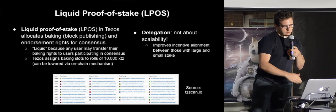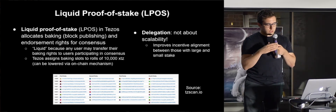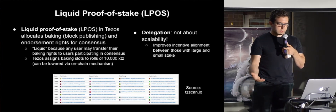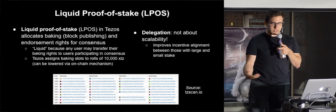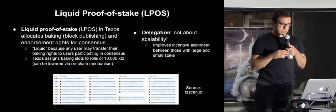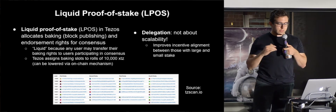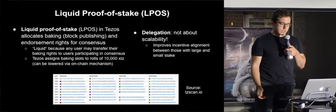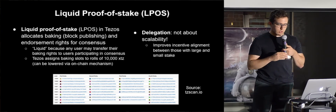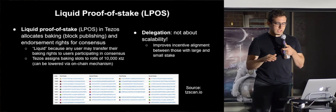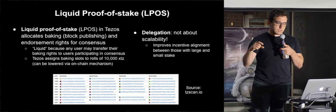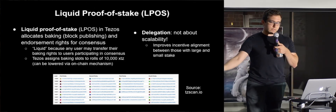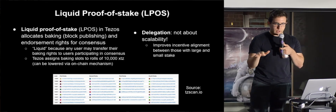Just to give an overview of how proof-of-stake works in Tezos — we call it liquid proof-of-stake. It allocates block publishing and endorsement rights for what we call baking — it's a French project — for consensus. It's liquid because any user can transfer baking rights to other users participating in consensus, known as bakers, and it assigns these slots to rolls of 10,000 XTZ. That barrier to entry can be lowered via the on-chain mechanism. The big thing is that delegation in Tezos is not for scalability like EOS — it's actually for incentive alignment, so that people with large stakes and people with small stakes get diluted roughly the same amount.